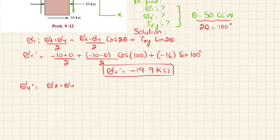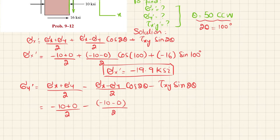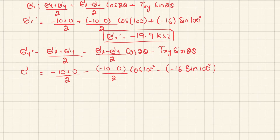Now moving toward finding Sigma Y dash. The equation is: Sigma Y dash equals (Sigma X plus Sigma Y) divided by 2, minus (Sigma X minus Sigma Y) divided by 2 times cosine of 2 theta, minus Tau XY times sine of 2 theta. Substituting: Sigma X is minus 10, Sigma Y is 0, divided by 2, minus (minus 10 minus 0) divided by 2 times cosine of 100 degrees, minus (minus 16) times sine of 100 degrees.